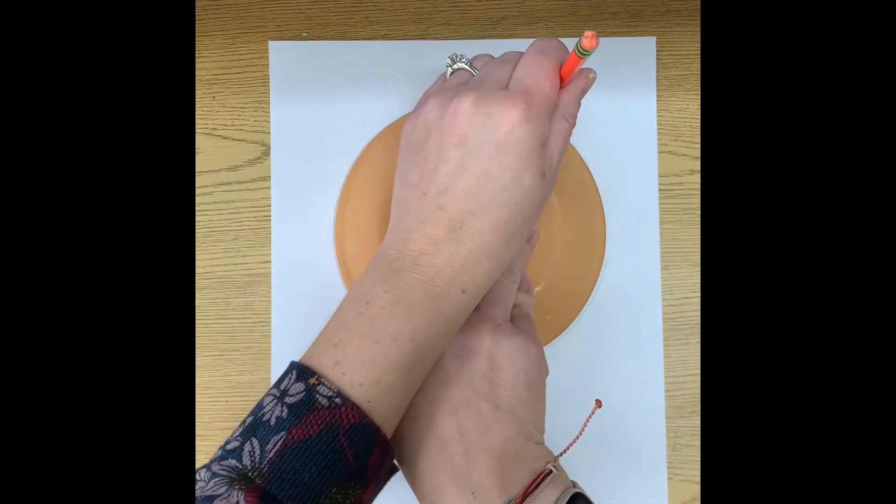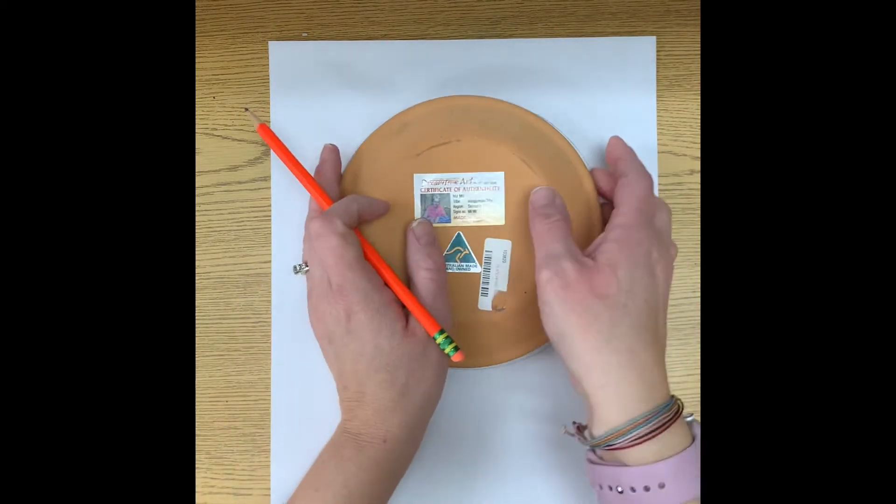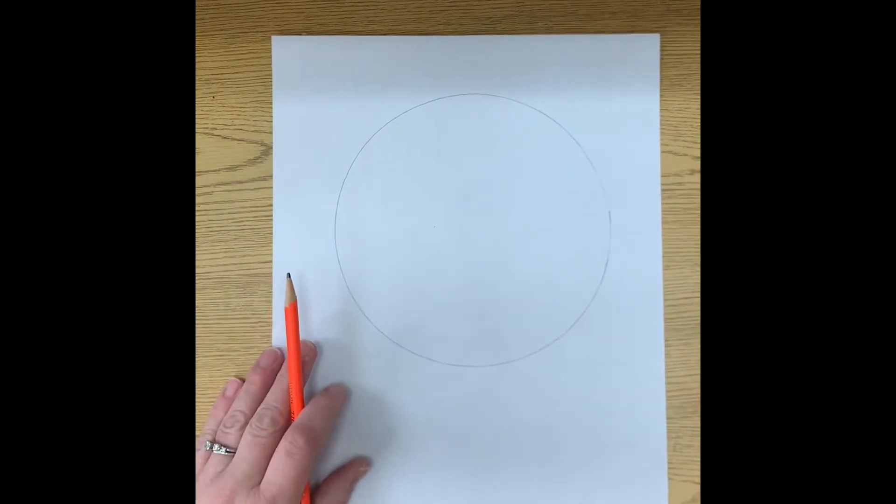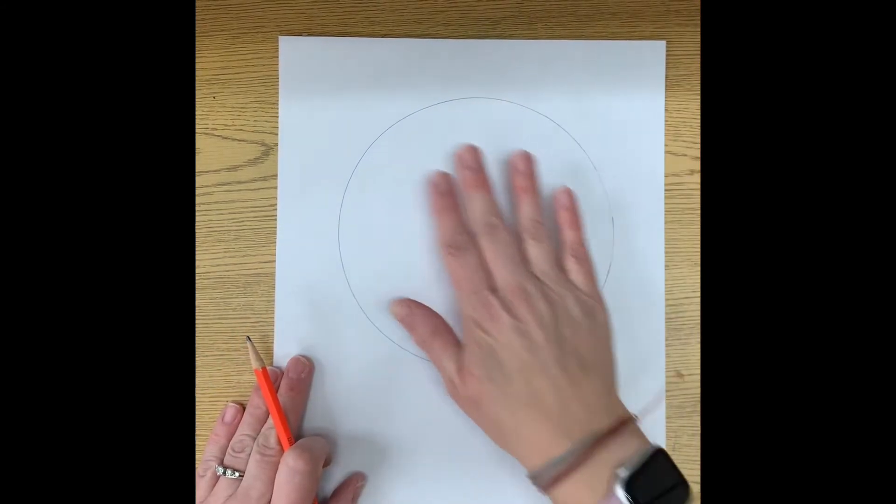You can go light. That way if you want to change something you can. Alright, so there I have my circle for my gumball machine.